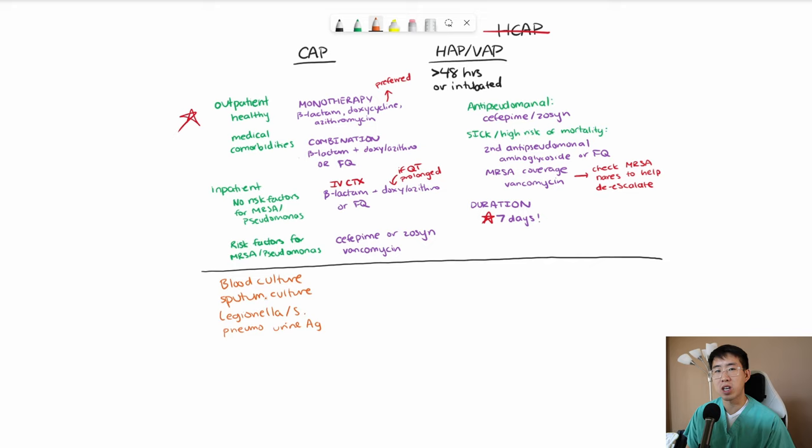This is one of the most common mistakes, that we just kind of blindly order all of these for all patients. But really, you should only reserve it for severe community-acquired pneumonia or patients with risk factors for MRSA or Pseudomonas.